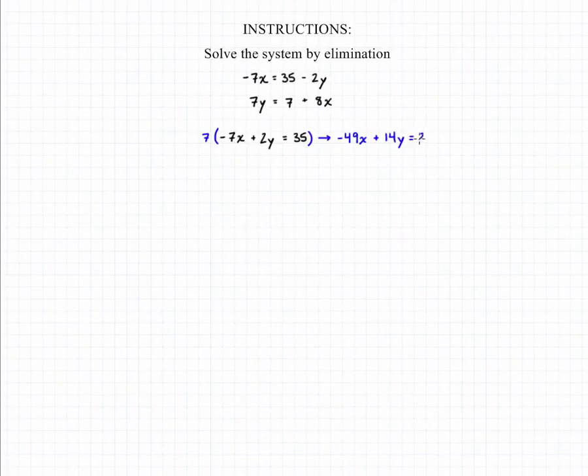So this will give us negative 49x plus 14y equals 245. We can take our second equation, rewrite it in standard form, and then multiply that equation by 2 and this will get us our matching pair of coefficients.